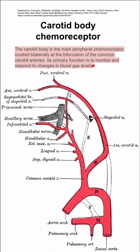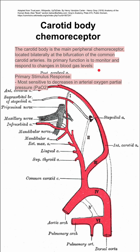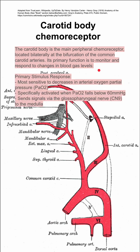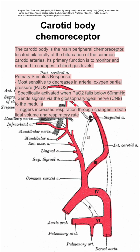The primary function of the carotid body chemoreceptor is to monitor and respond to changes in blood gas levels. The carotid body chemoreceptor is most sensitive to decreases in arterial oxygen partial pressure, PaO2. It's specifically activated when the PaO2 falls below 60 millimeters of mercury, and it sends signals to the medulla via the glossopharyngeal nerve — that's cranial nerve 9.